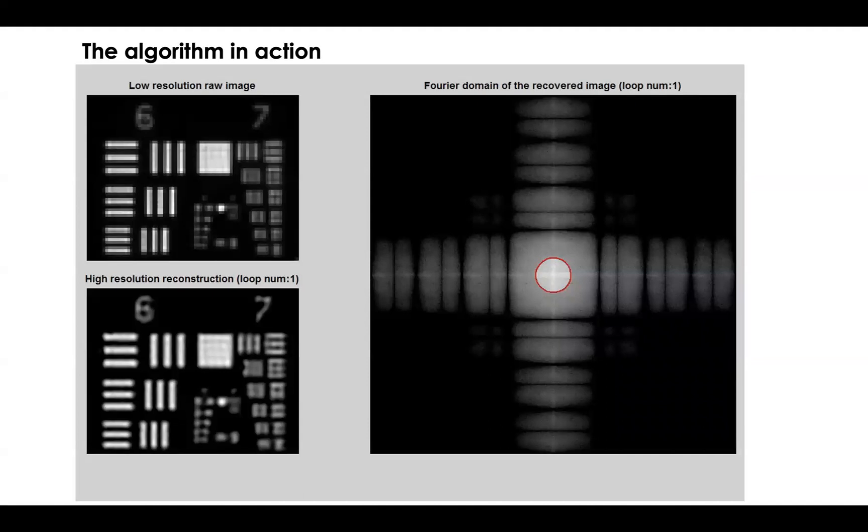So here's a video of Fourier ptychography in action. In the upper left you'll see each low resolution image that we've captured proceed step by step. In the lower left you'll see our high resolution reconstruction. You'll note that it looks just like our first low resolution image because we initialized our algorithm with the first image we captured. Pay particular attention to this area here where there's features that are not resolved at all. That's where the high resolution details will be highlighted. On the right is our complex spectrum. The red circle denotes the light that's able to pass through our lens under each LED's illumination.